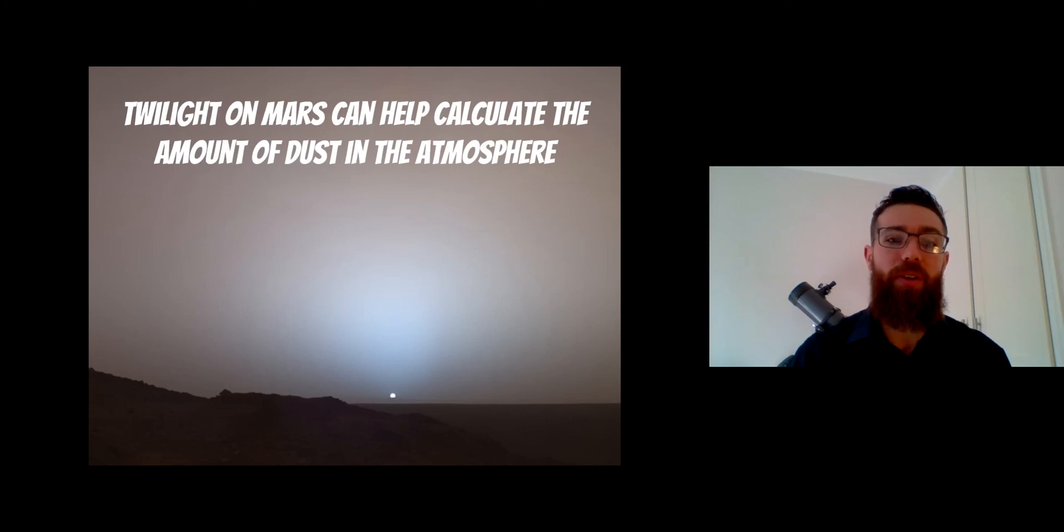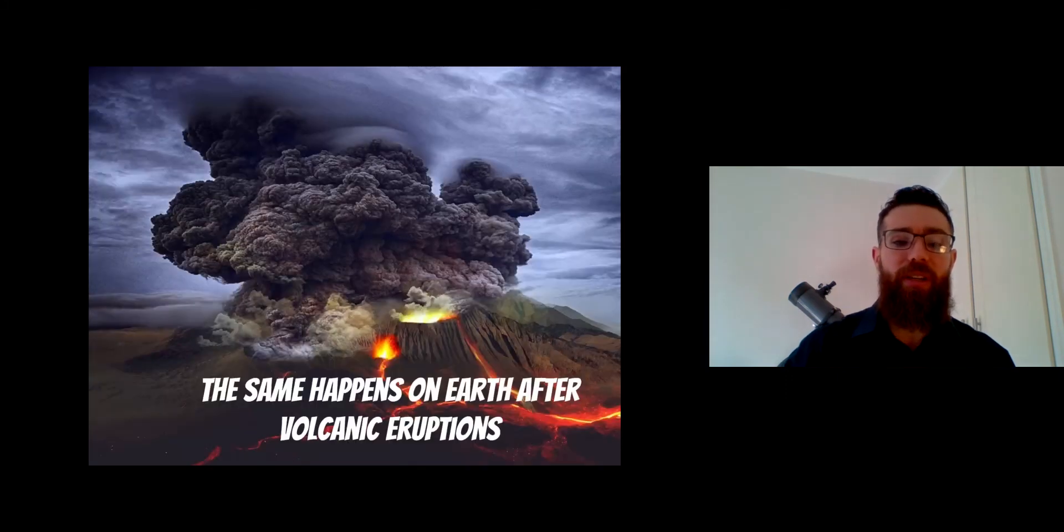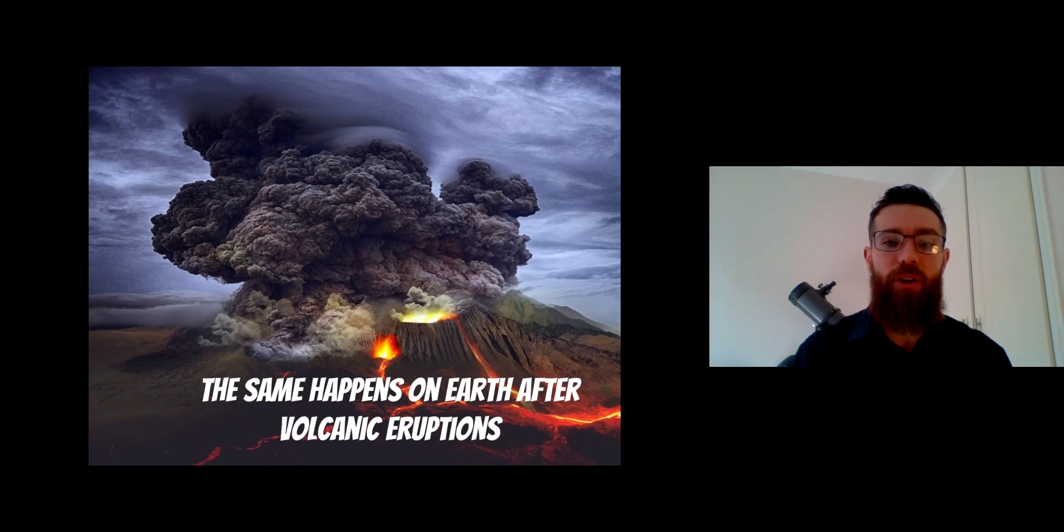Interestingly, we get a similar thing happening on Earth. If we have a large volcanic eruption, that will send a lot of dust into the atmosphere and we get a similar effect. We can get some really unusual colors in our sunsets as well as a lengthening of that twilight period. It's the same sort of thing, but with volcanoes. It's basically because Mars has small dust particles in its atmosphere which Earth generally does not have. Thank you for watching.